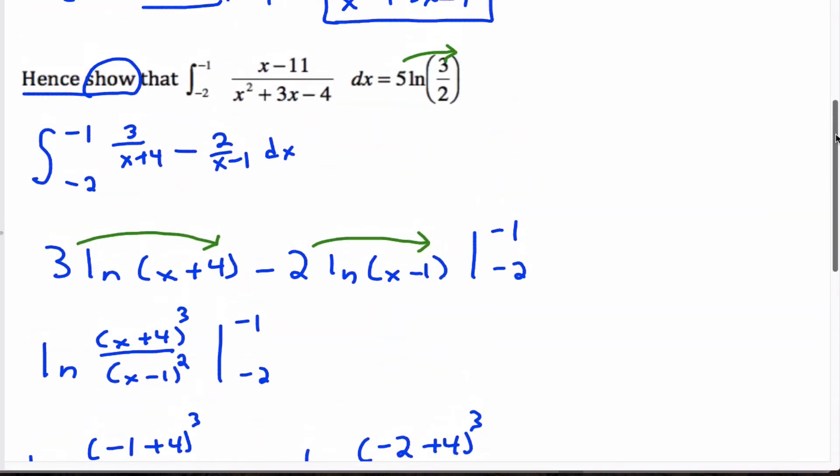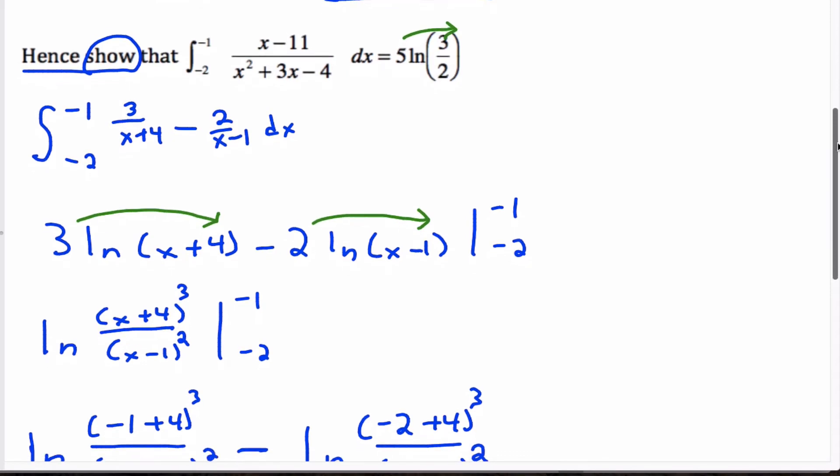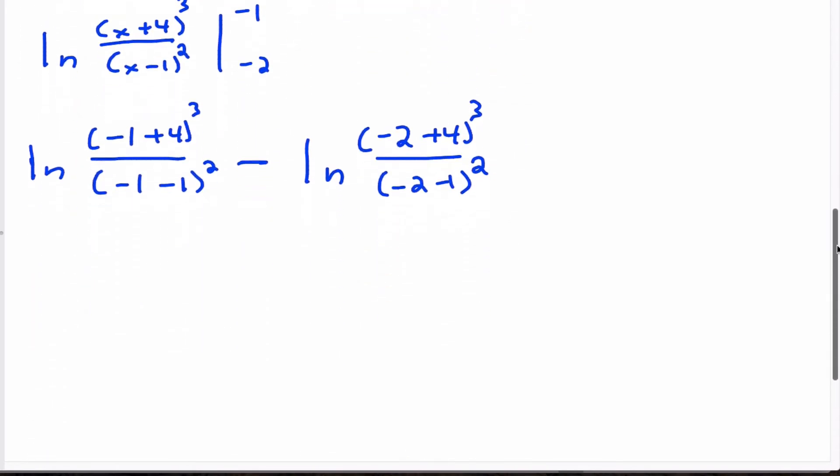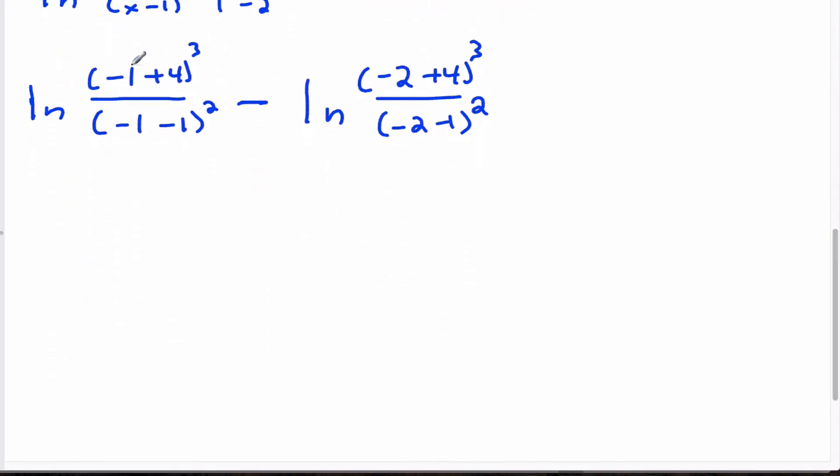So we need a 3 on the numerator, a 2 on the denominator, and a power of 5 on both. Okay. Minus 1 plus 4 is indeed a 3, so that is good news for us. Negative 1, negative 1 is negative 2 squared, which is actually the same as 2 squared, because the negative number is squared.